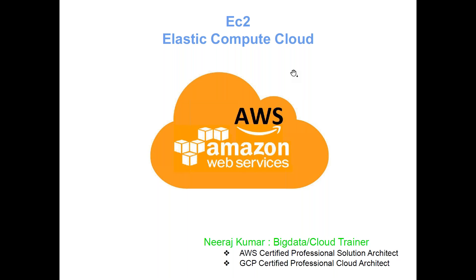Today's class is about EC2, which stands for Elastic Compute Cloud. In simple words, EC2 is nothing but a remote server which is physically located at some place, and as a user you can simply log in from your browser or from any tool and work on it. Since it's on-demand, as per your requirement and configuration needs you can use it, and AWS will charge based on usage. If you are not using your server, you should stop it and shut it down, because if it keeps running, AWS will keep charging for it.